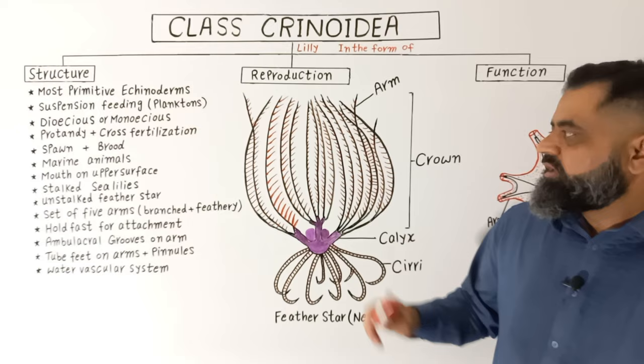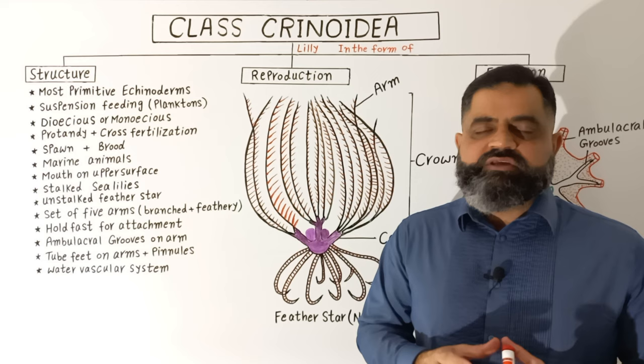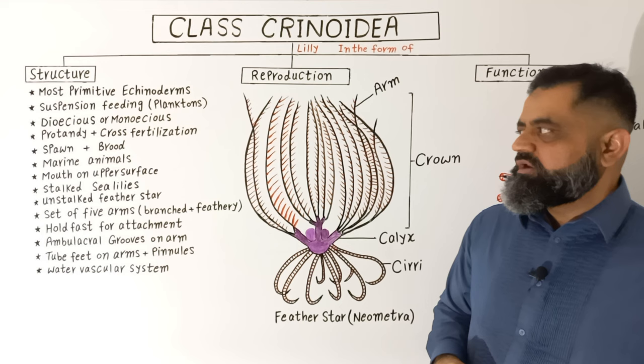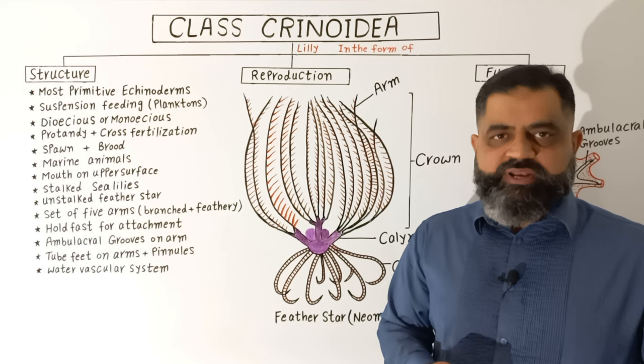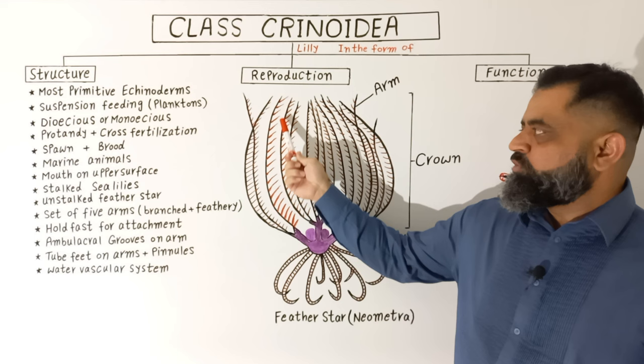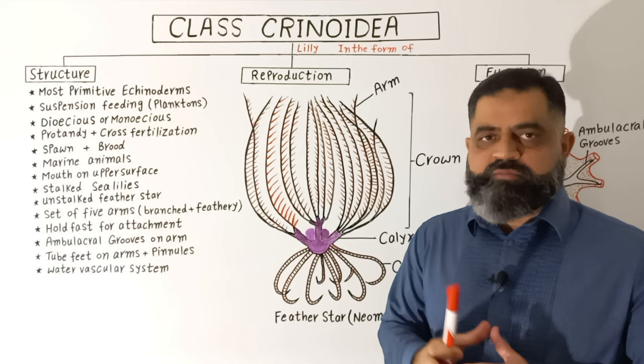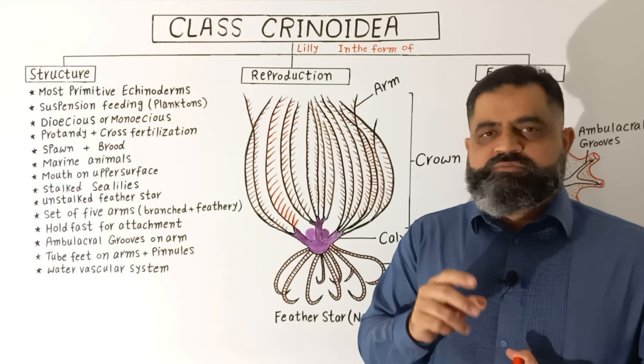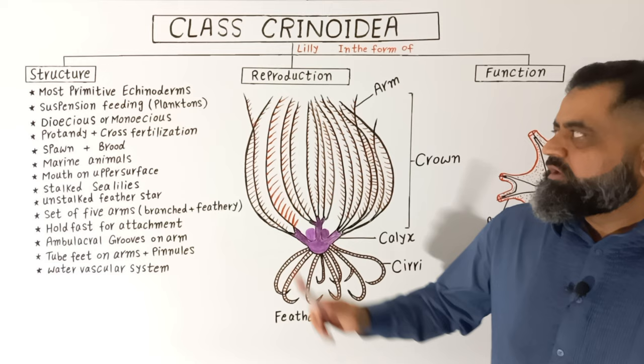If we look at the digestive system, these animals usually feed by filter feeding or suspension feeding with the help of their arms. These arms contain grooves through which food particles — in the form of phytoplankton or zooplankton — travel down towards the mouth, where food enters the oral cavity and is digested. The digestive system is U-shaped and there is no stomach present.